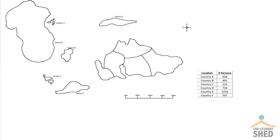We're now going to look at how to create a flowline map. I have here the make-believe island, and there are several other countries surrounding it. What we're going to look at is the flow of persons from those different countries into make-believe island. We're going to need a map title — I've already placed in a compass and a scale. I've given my map the title 'Migration of Persons into Make-Believe Island,' and for a map like this that involves the movement of persons, it's good to use a flowline map.